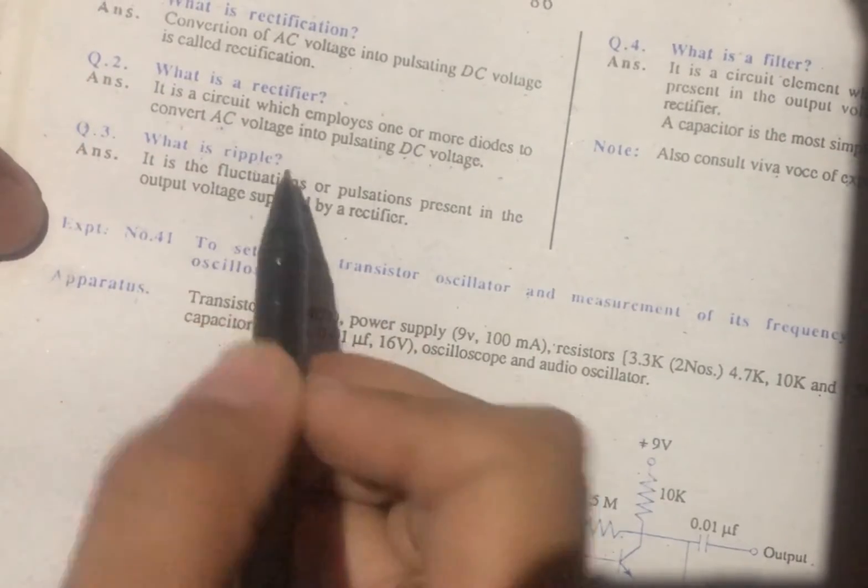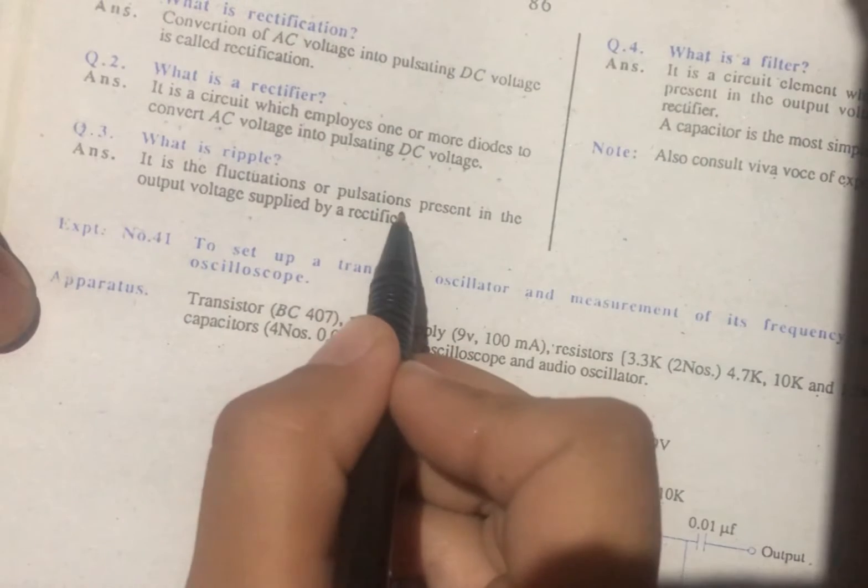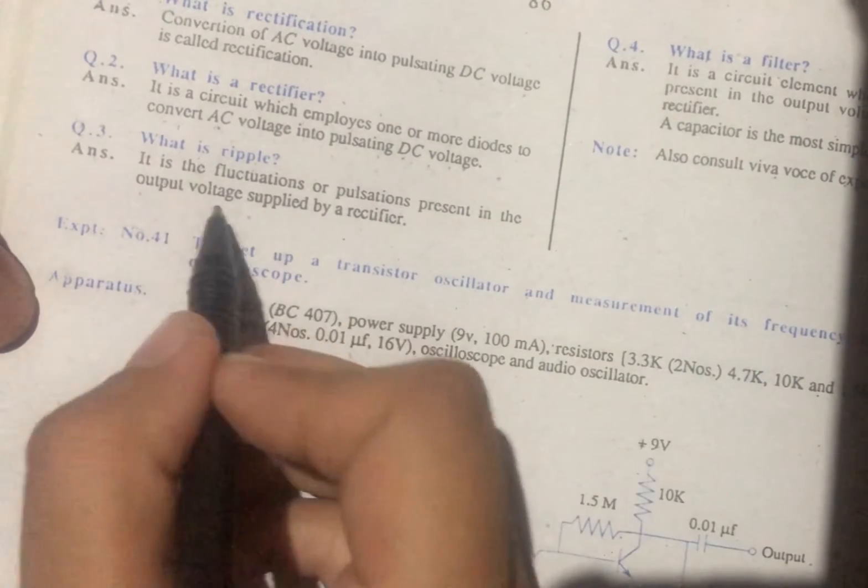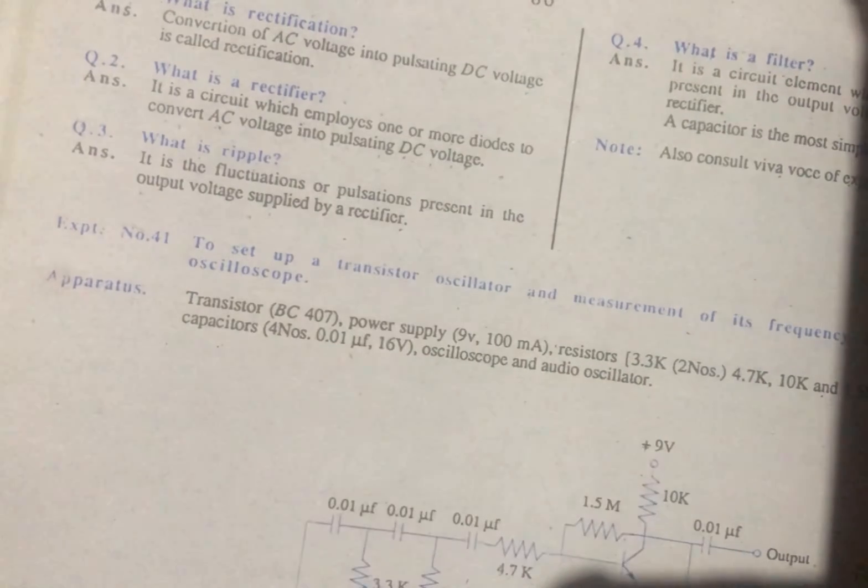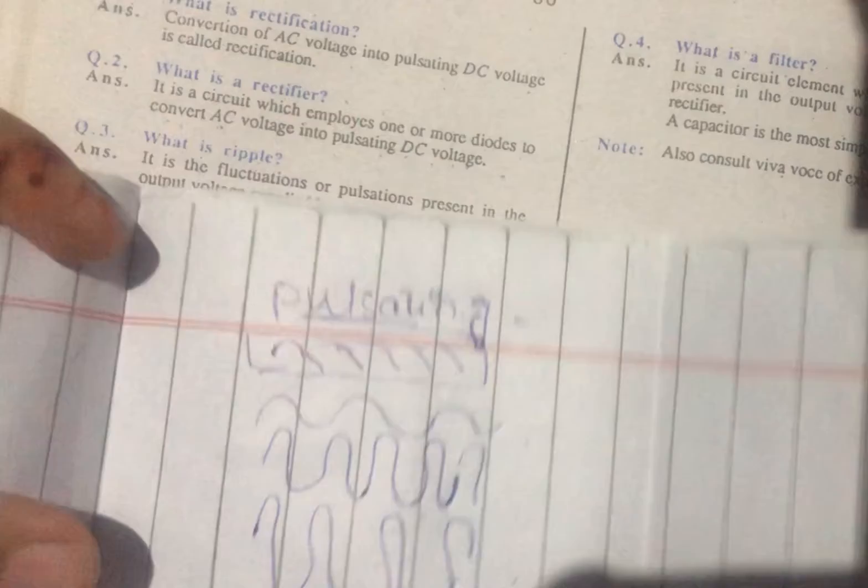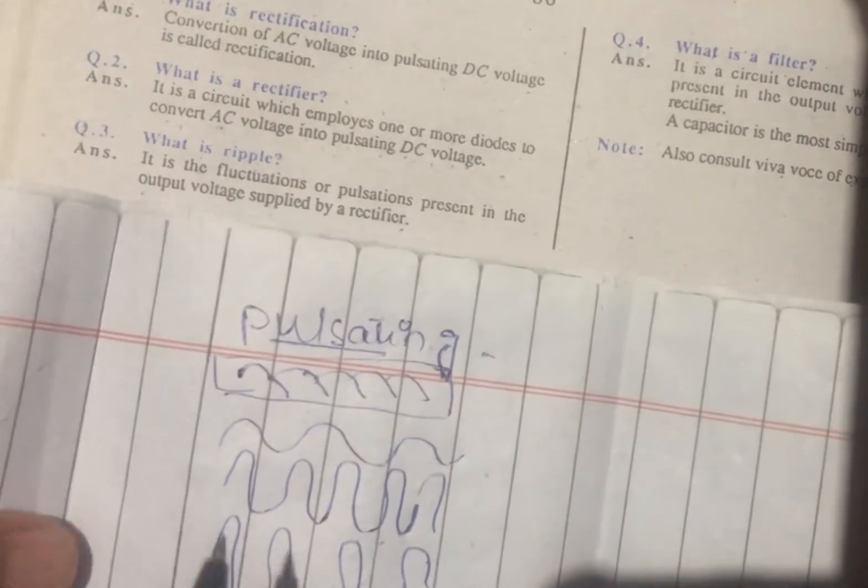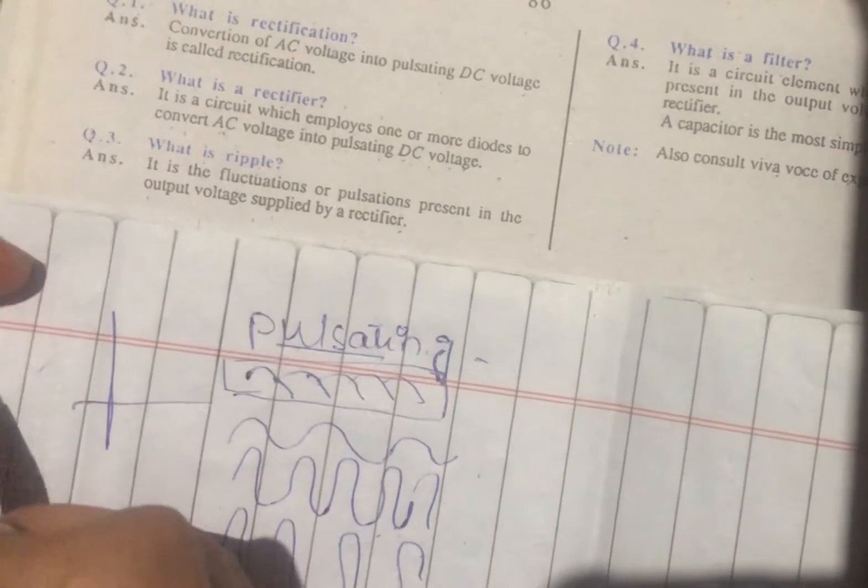What is Ripple? It is fluctuation or pulsation present in the output voltage supplied by a rectifier. The voltage or current which we have applied, we have given it in this form.